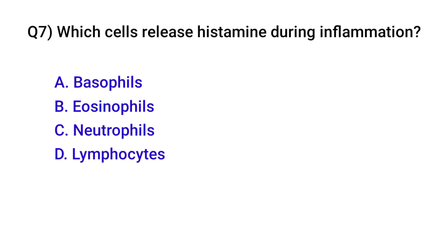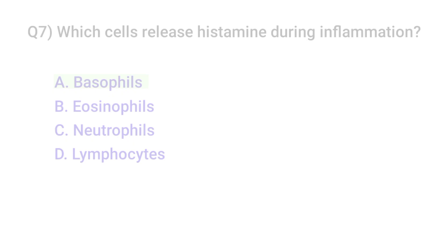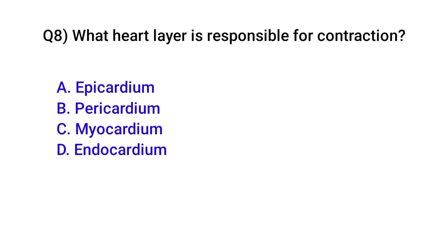Question number seven: Which cell releases histamine during inflammation? Correct option is A: Basophils. Question number eight: Which heart layer is responsible for contraction? Correct option is C: Myocardium.